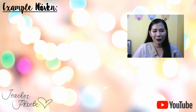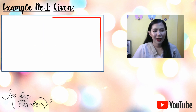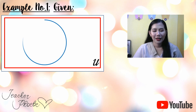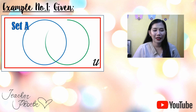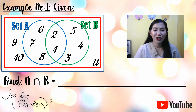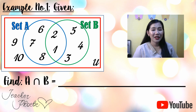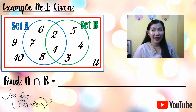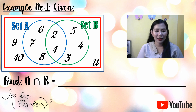Let us have Example Number One. Given a universal set, a blue circle for Set A and a green circle for Set B, and the elements — find the intersection of A and B. Based on the definition, the intersection of A and B means getting the common elements.